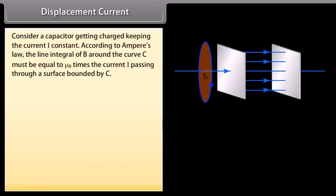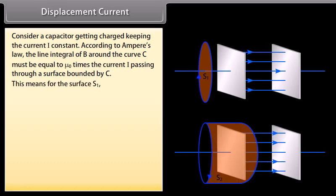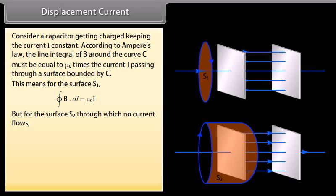Consider a capacitor getting charged keeping the current I constant. According to Ampere's law, the line integral of B around the curve C must be equal to mu not times the current I passing through a surface bounded by C. This means for the surface S1, closed integral of B dot DL is equal to mu not I. But for the surface S2 through which no current flows, closed integral of B dot DL is equal to 0. It means there is an inconsistency.